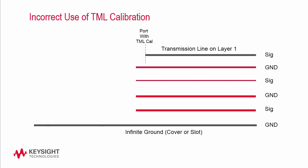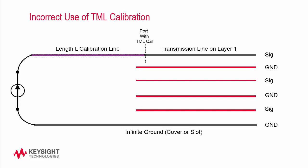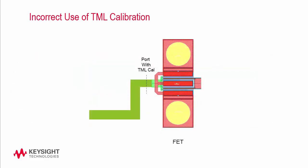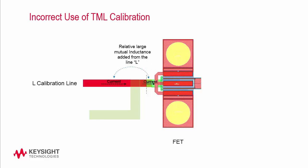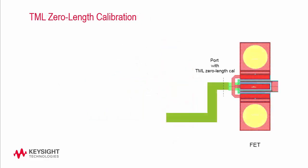However, there are cases where TML calibration may not work properly. The model for the calibration line extension L, derived from the perfect thru calibration standard, uses the infinite ground plane in the stack-up definition for its return current. This may cause an impedance mismatch between the calibration line L and the DUT, as well as smaller fringe capacitance computed in the calibration line, which eventually results in inaccurate calibration. This is particularly true for multi-layer structures where the infinite ground is set to the bottom layer of the stack-up. In a real design, if the feed line is short but modeled with TML calibration, you may see a higher inductance value, since the added mutual inductance from the TML calibration is calculated on the longer calibration line L, resulting in inaccurate calibration.